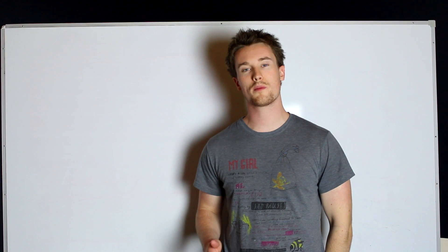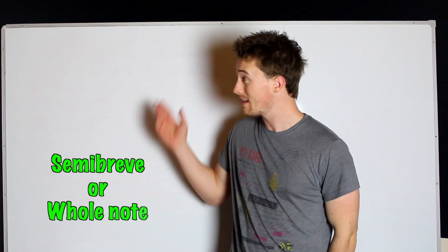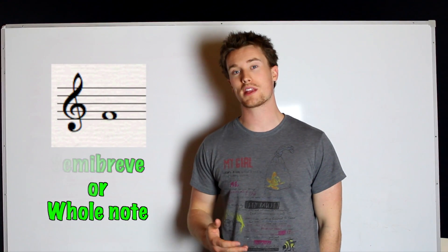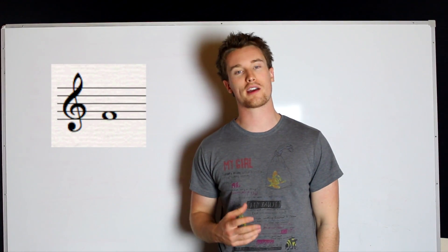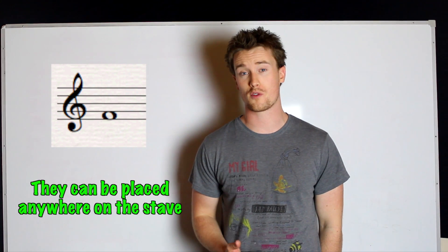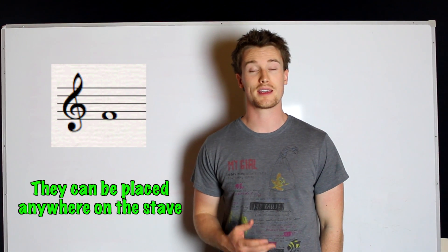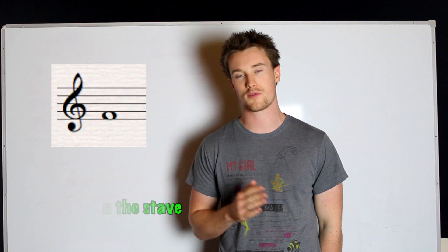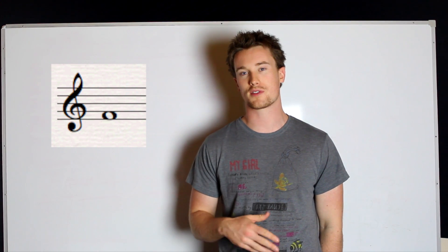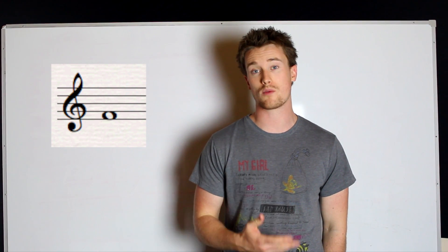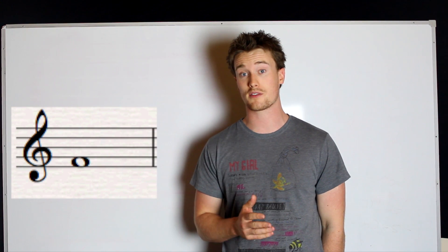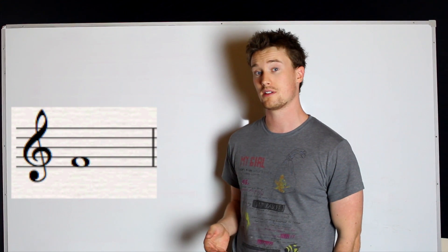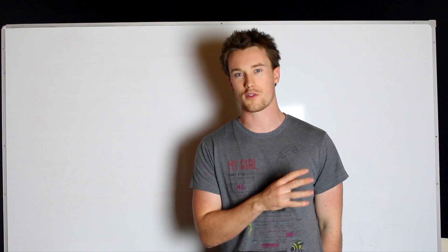When we're in 4/4 or common time, we have a whole note. A whole note can also be called a semibreve — they look like this. What that means is when you've got a whole note or a semibreve in 4/4 or common time, there's only going to be one for the whole bar. That means if it starts on beat one, at the very beginning of the bar, there's only going to be one for the whole bar.